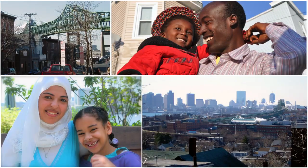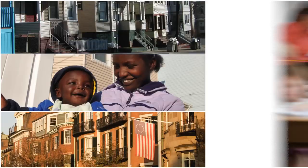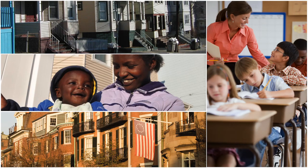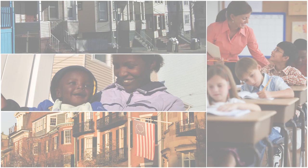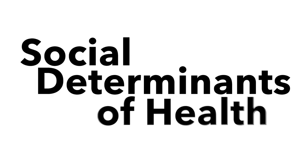Hi, my name is Peter Slavin. Health starts in the community where people live. It's really their access to housing, good schools, good food that have a huge impact on the health of a population. These are the things that we refer to as the social determinants of health.